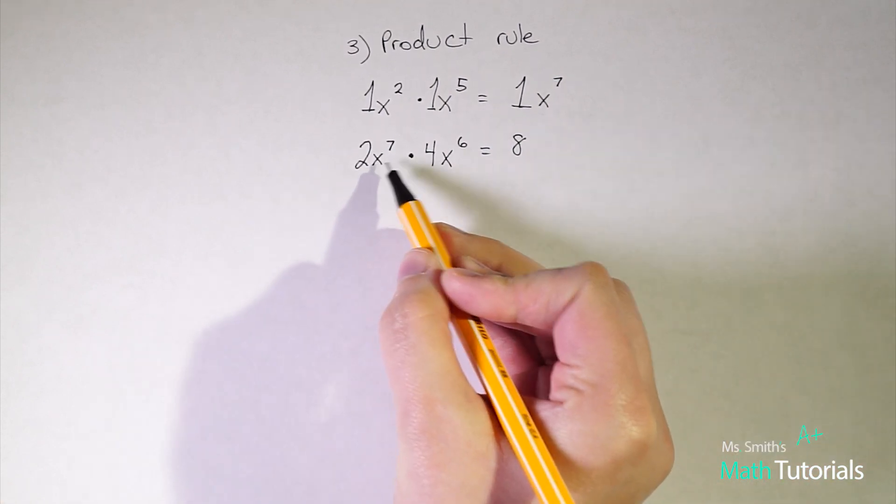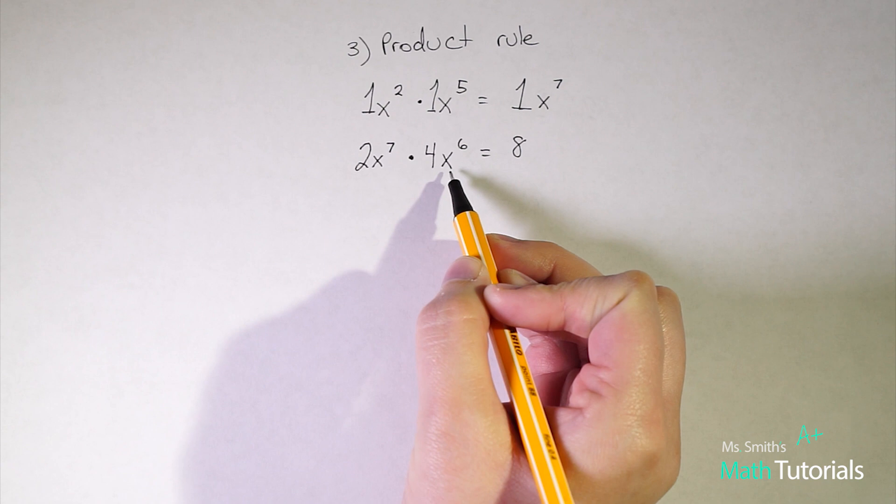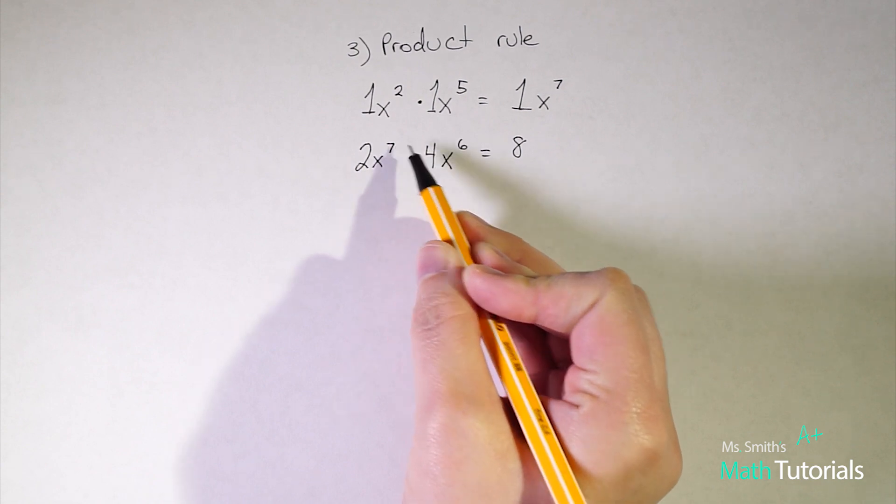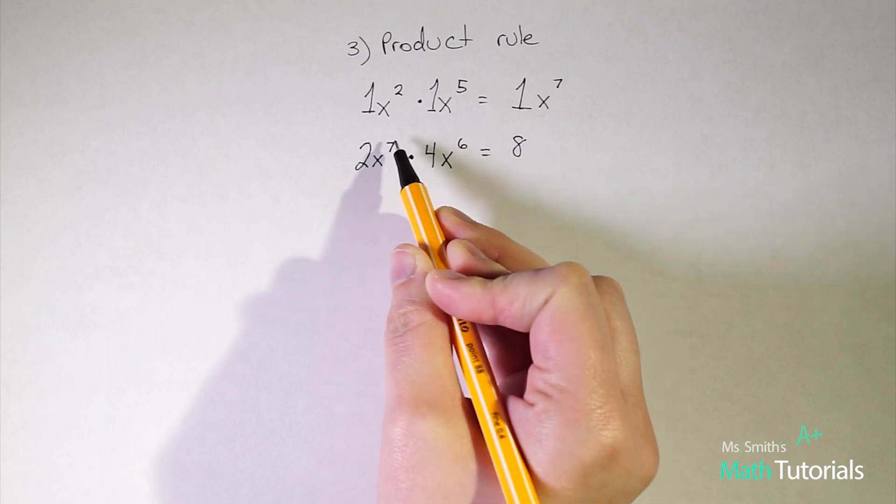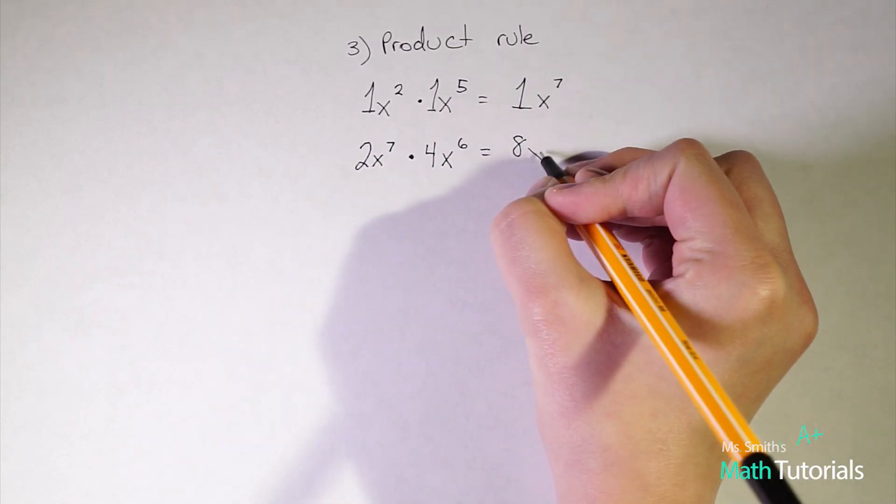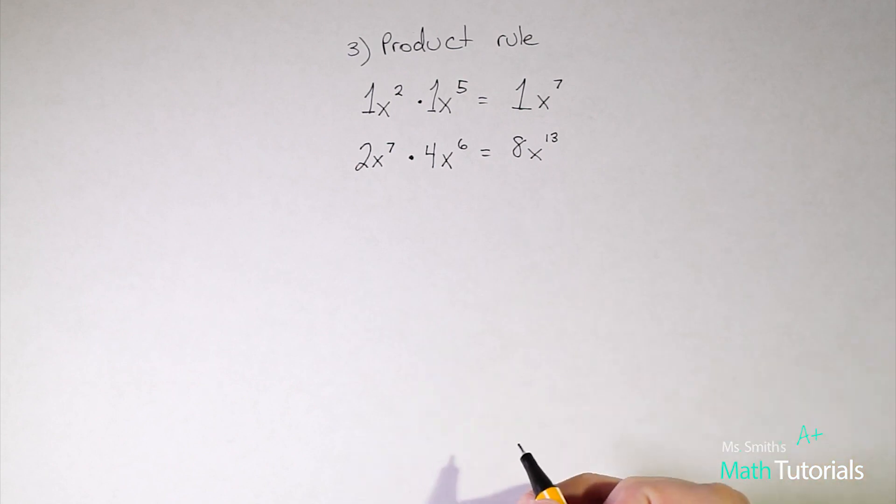And then we've got two like bases here. These are both x's, so I can combine them. So we've got x to the seventh times x to the sixth. I'm just straight multiplying across, so I add my exponents. So in this case it would be x to the thirteenth.